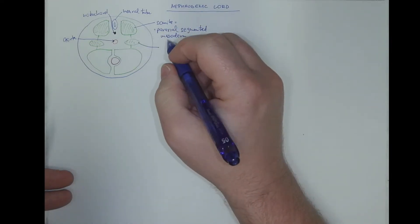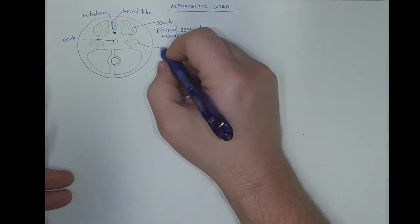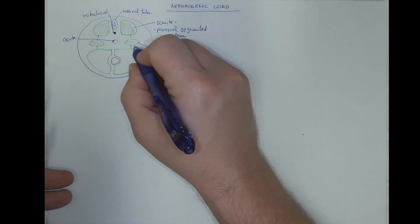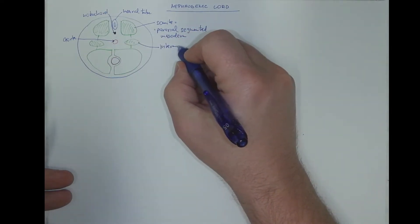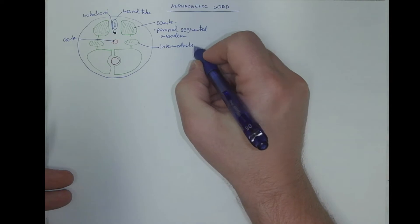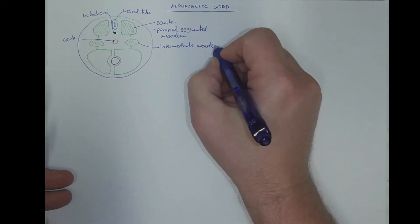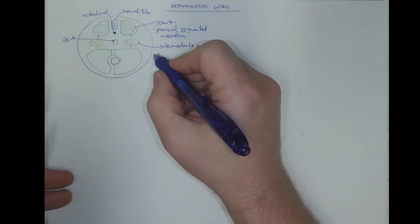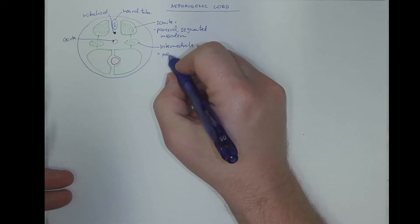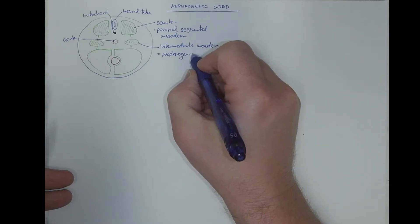This is the so-called intermediate mesoderm on both sides that becomes the so-called nephrogenic cord.